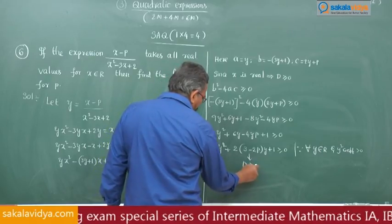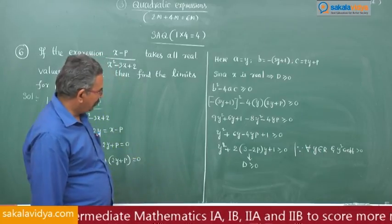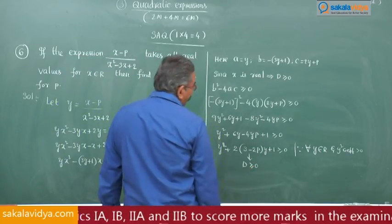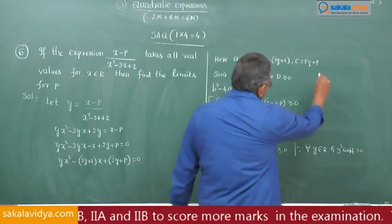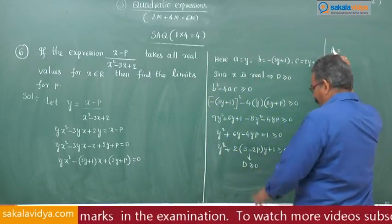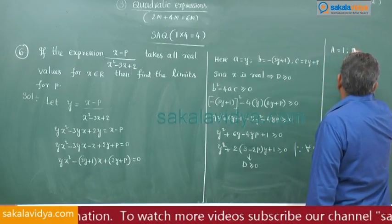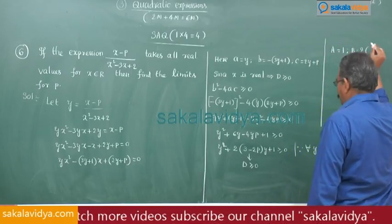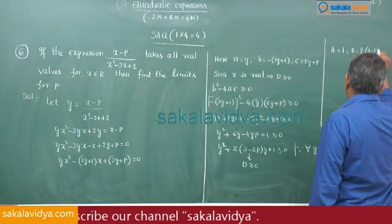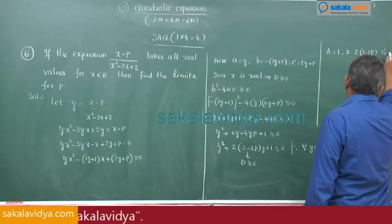It may be equal to or greater than 0, so its discriminant must also satisfy a condition. Here capital A₁ equals 9, capital B₁ equals 2(3 minus 2p), and capital C₁ equals 1.